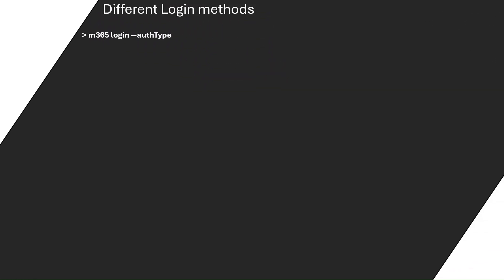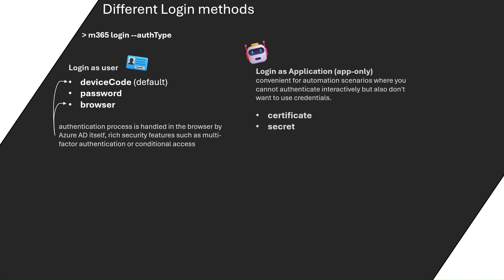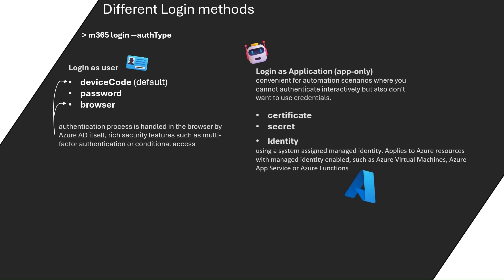Let's get back to the slides. Before we wrap this up, let's go over some small tips. The M365 login command is quite advanced and allows you to log in as a user using either the device code, password, or browser authentication types. The first and last are the recommended ones because you log in through your browser and can leverage rich security features like multi-factor authentication. You can also log in as an application using the certificate or secret authentication type to log in without providing a username and password — perfect for automated scripts. You can also use the 'identity' authentication type, tailored for Azure resources like Azure Virtual Machines or Azure Functions.